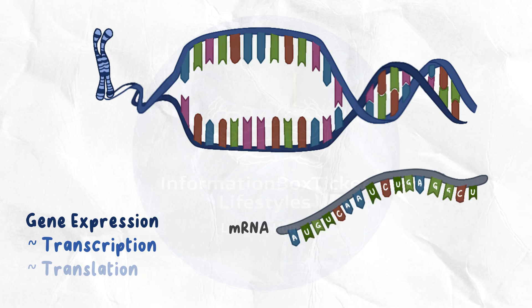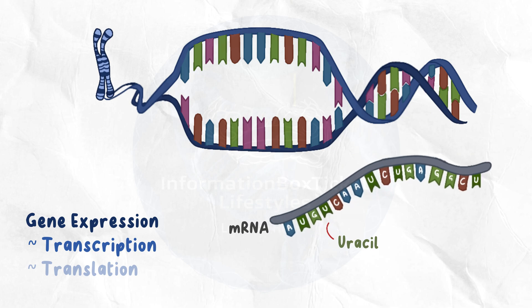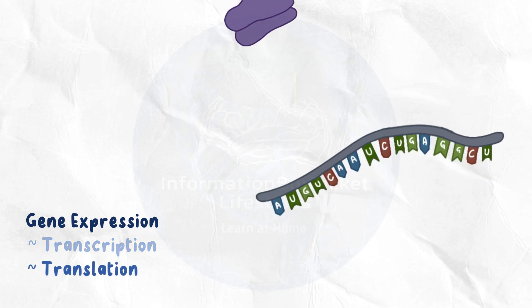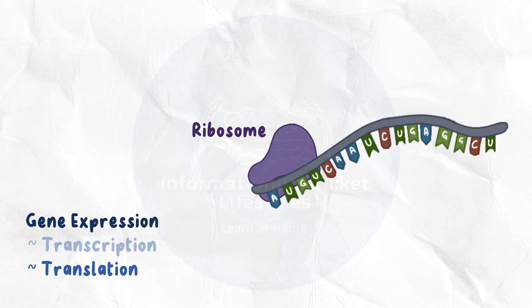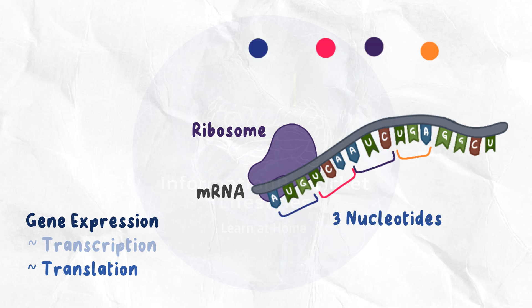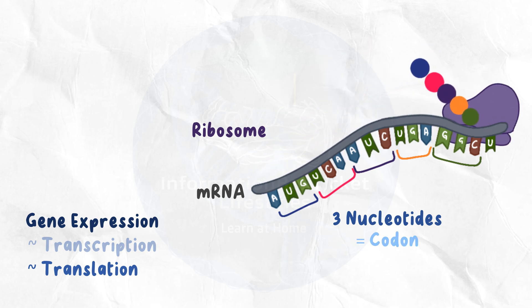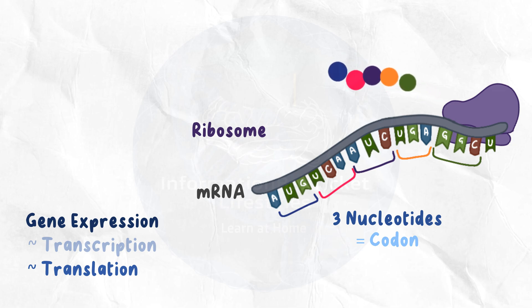The mRNA differs from DNA in one way: instead of thymine, it contains uracil nucleotides, or U. During translation, cell organelles called ribosomes read the mRNA molecule in three-nucleotide words known as codons, with each three-nucleotide sequence coding for an amino acid that will eventually form part of the protein.